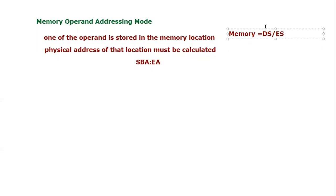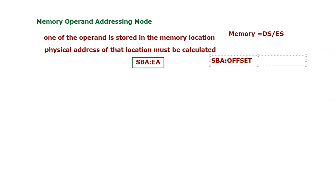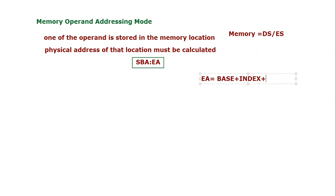Whenever we discuss memory, we have to calculate the physical address, because in the microprocessor only 16-bit logical addresses are given, so that logical address must be converted into a physical address. The physical address formula will be used: SBA colon EA. Earlier we were using 'offset' instead of EA. EA means effective address. Now instead of offset, we use the term effective address. Effective address is equal to base plus index plus displacement.